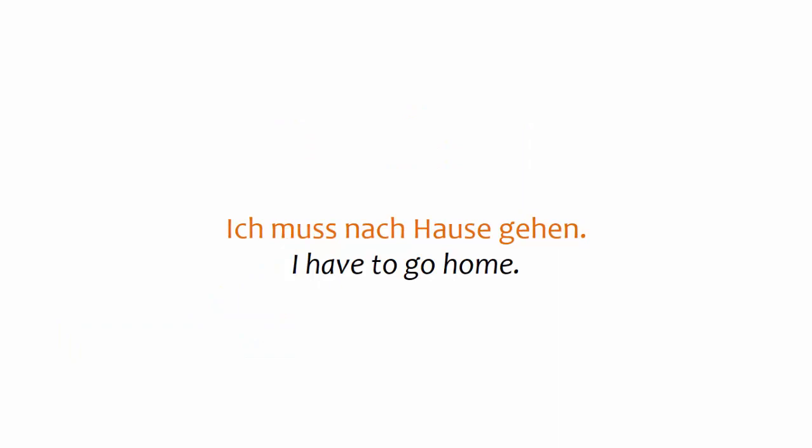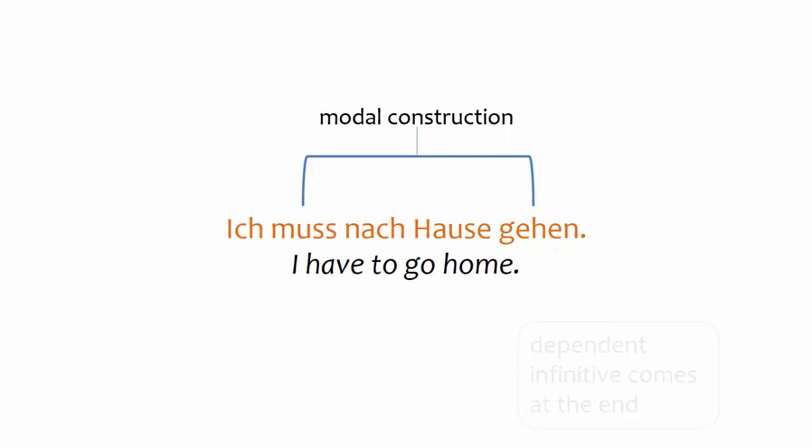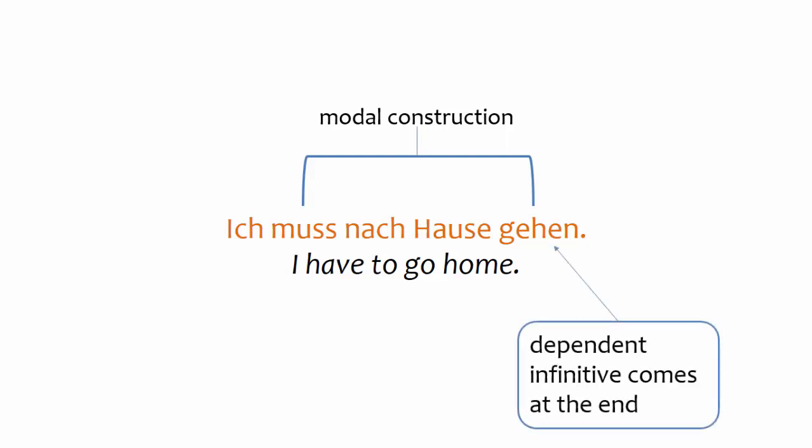Now that we've seen why to use modal verbs, let's look at clause structure. Sentences with modal verbs are formed with a conjugated modal verb plus a dependent infinitive. The dependent infinitive comes at the end of the clause. That's a standard word order rule — infinitive verbs typically go at the end of their clause. If you need a refresher on word order, see the playlist.